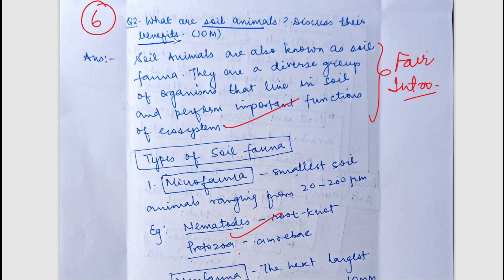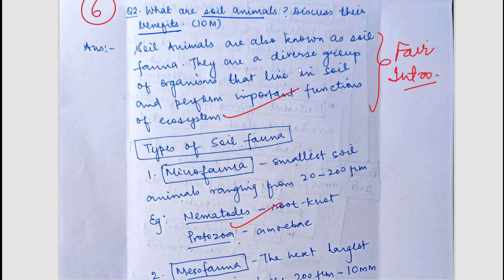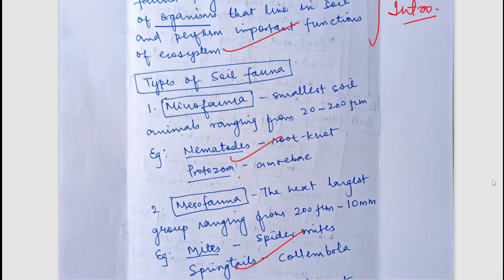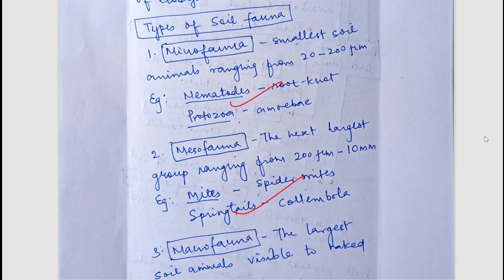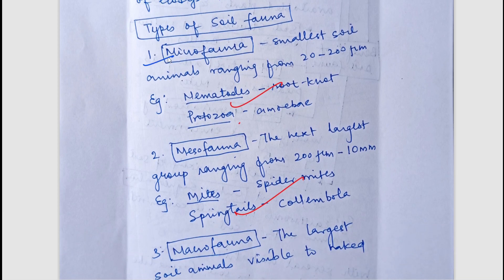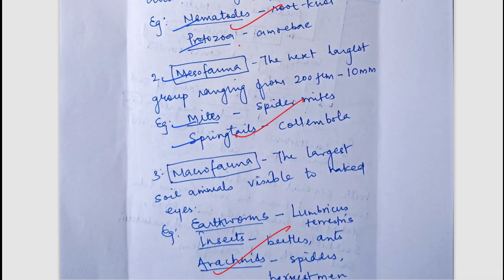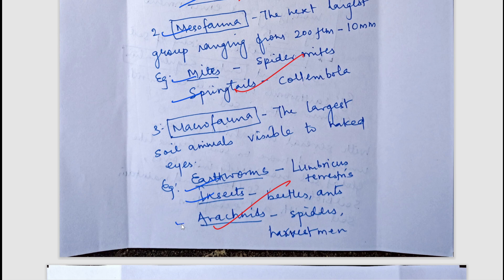The second question was: what are soil animals and discuss their benefits? Soil animals are a diverse group of living organisms present in the soil that perform important functions in the ecosystem. Types of soil fauna include micro fauna such as nematodes and protozoa, meso fauna such as mites and springtails, and macro fauna such as earthworms and insects.